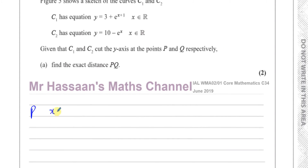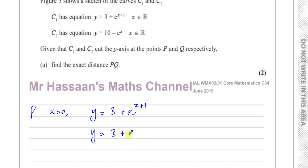For P, when x equals 0, y equals 3 plus e to the power of 0 plus 1, which is 1. So that's 3 plus e. The coordinates of P are therefore (0, 3 + e).